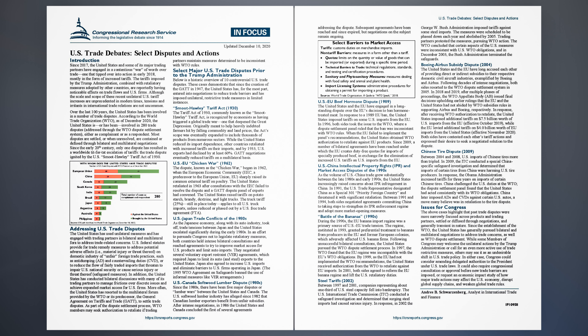U.S.-Canada Softwood Lumber Dispute, 1980s: Since the 1980s, there have been five major disputes, or lumber wars, between the United States and Canada. The U.S. softwood lumber industry has alleged since 1982 that Canadian lumber exporters benefit from unfair subsidies. After intense negotiations, in 1986 the United States and Canada concluded the first of several agreements addressing the dispute. Subsequent agreements have been reached and since expired, but negotiations on the subject remain ongoing.